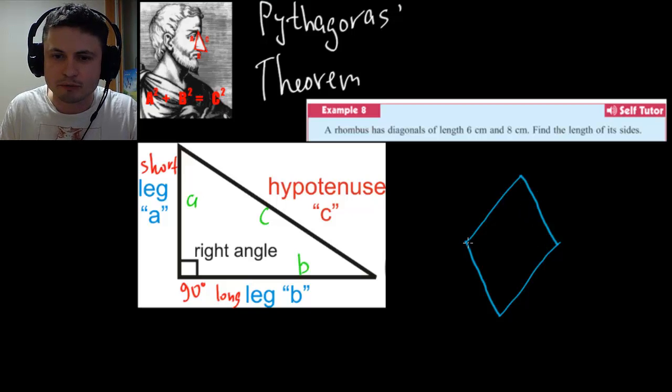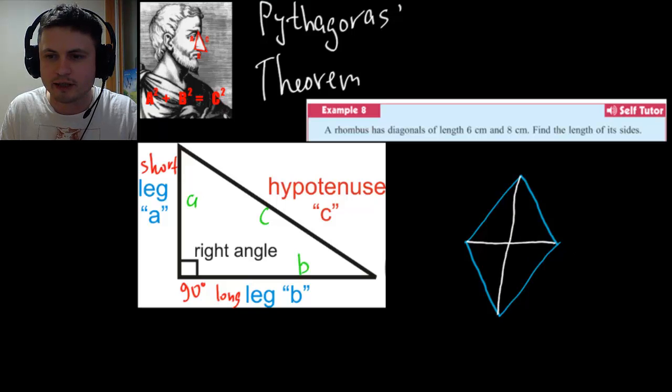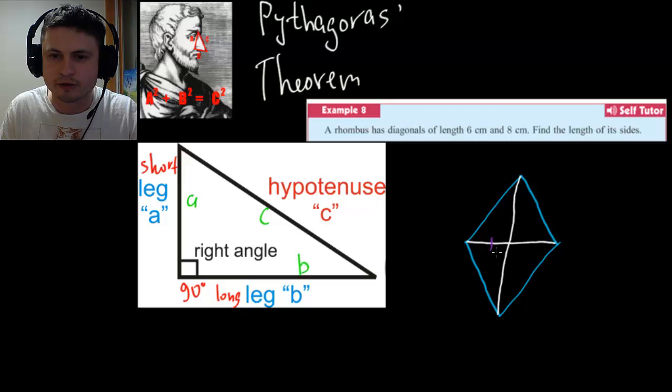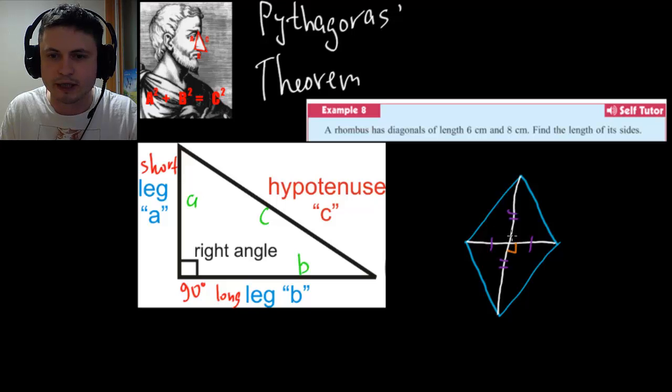And also a rhombus has diagonals that basically cross and they bisect each other. They basically create these sides that are equal. So this is equal to this and this is equal to this. And the other feature that a rhombus has is that all of its angles created by diagonals are now 90 degrees. So these are all 90 degree angles.